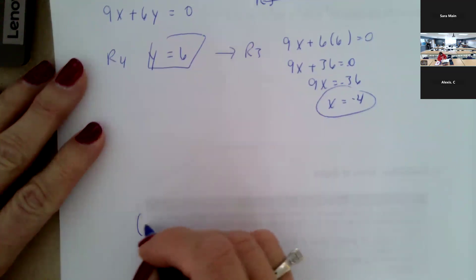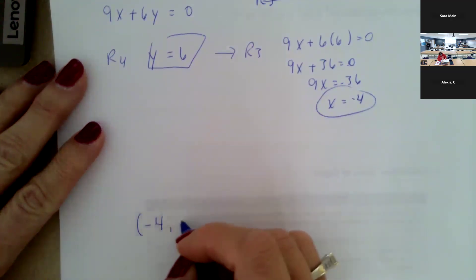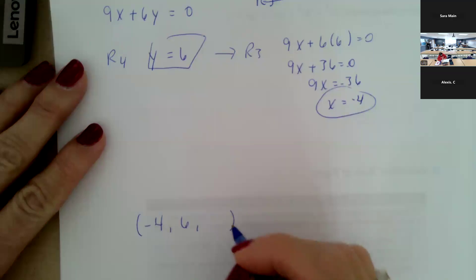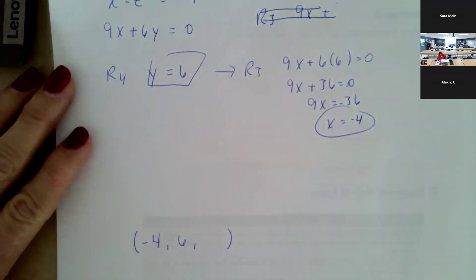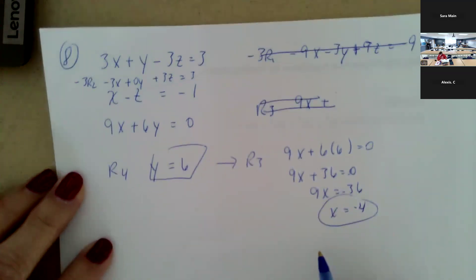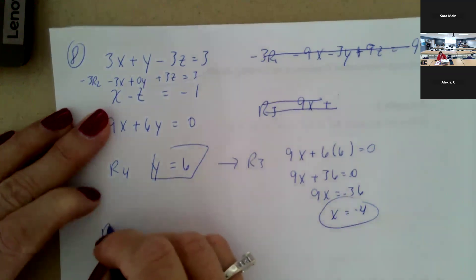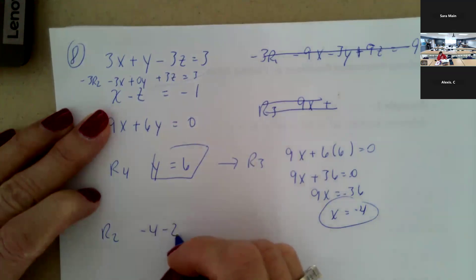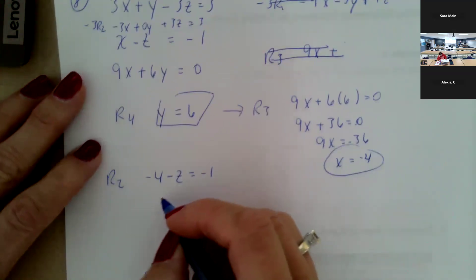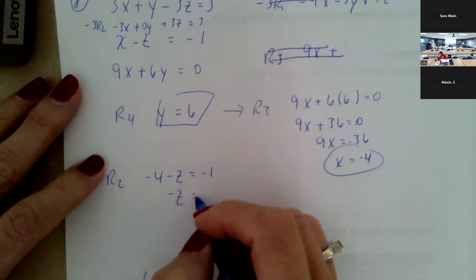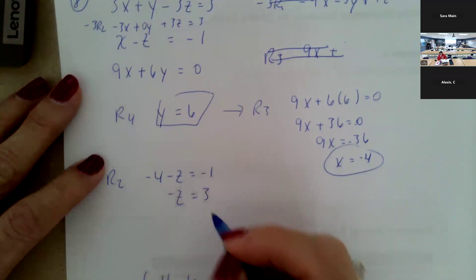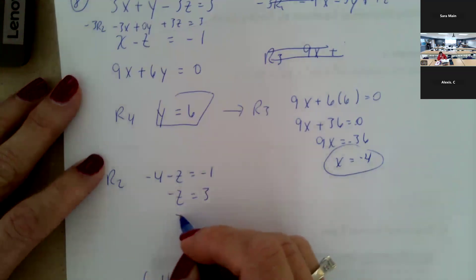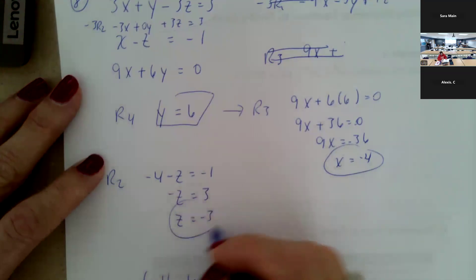So far I have x equals negative four and y equals six, with z still open. Going up to row two, since x is negative four: negative four minus z equals negative one. Adding four to both sides and taking the opposite gives z equals negative three.